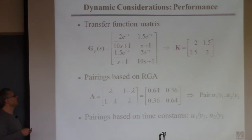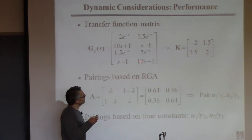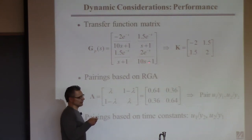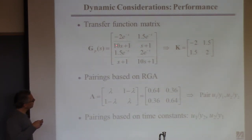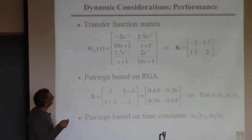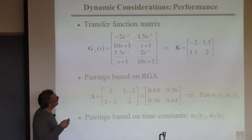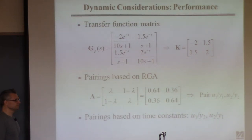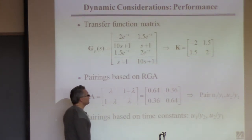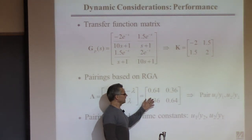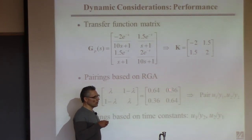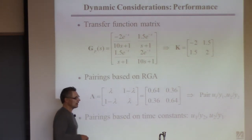Hopefully you've learned that the time constant of the process determines how quickly you can do control. If the process has a large time constant, you have to settle for slow control. The argument here is these time constants are actually a lot smaller than those, so you should probably do control based on those — small time constants are good. This is a case where you'd do your RGA, do your pairing, and then look and reconsider. Since these RGA numbers are relatively close and not negative, you might use the other pairing instead.